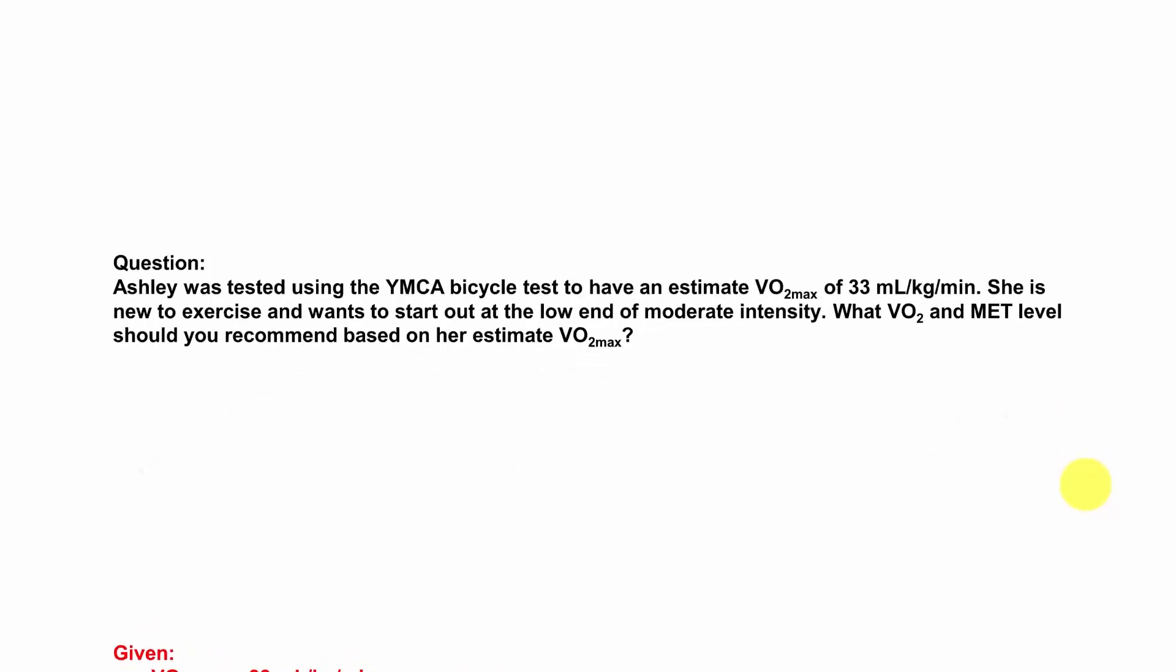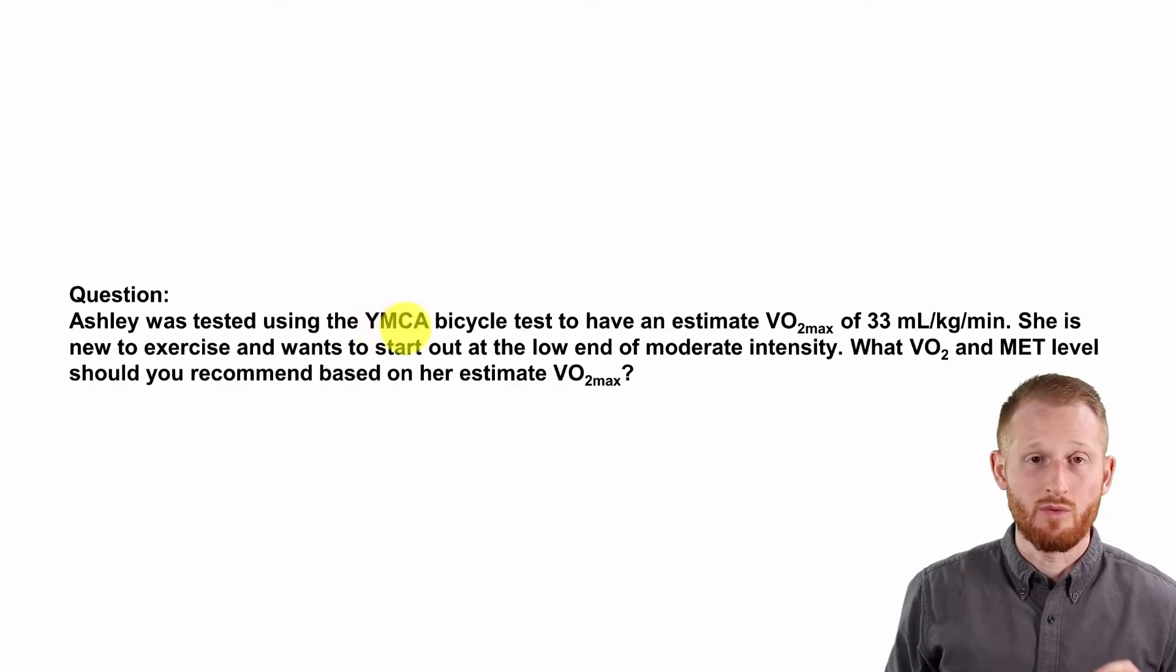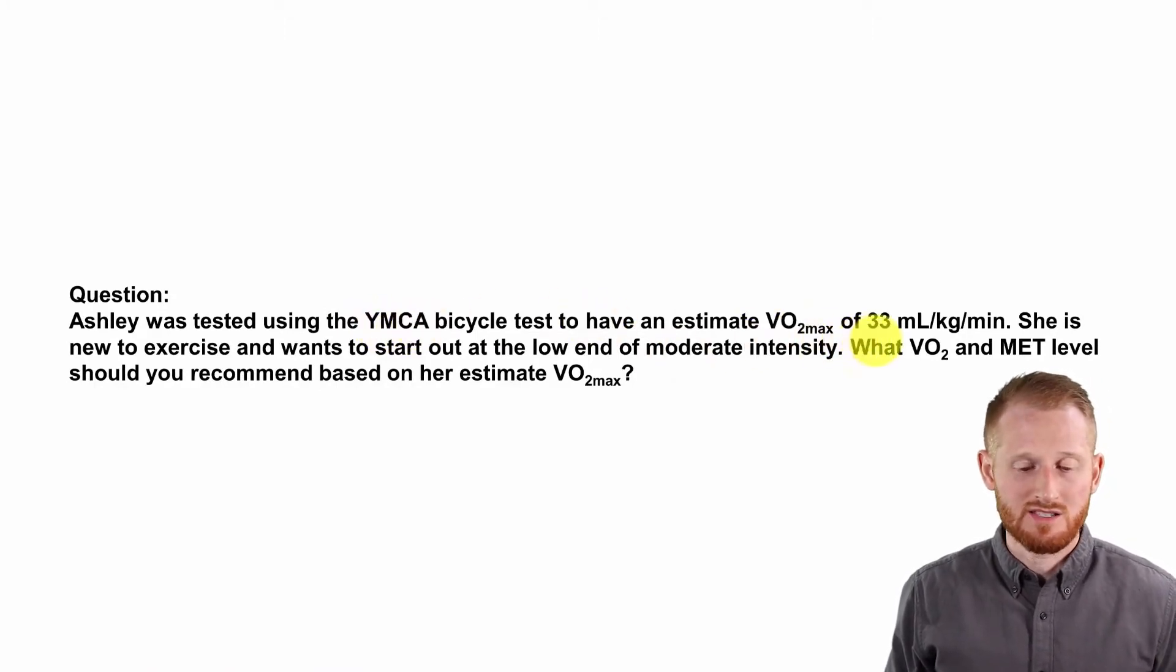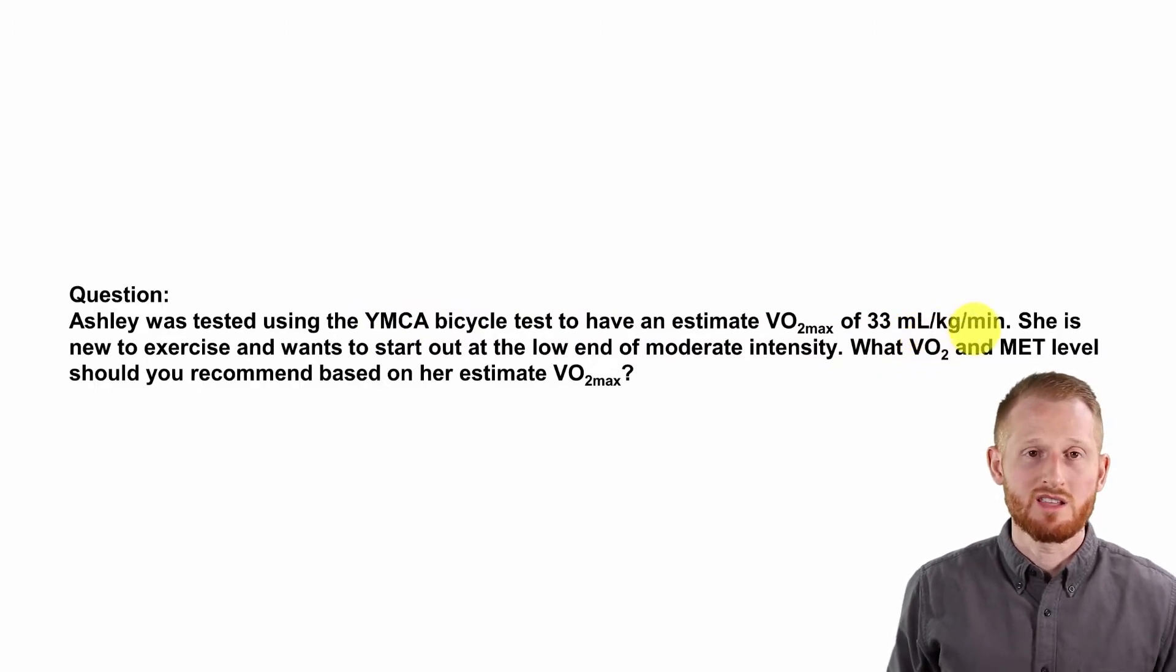Let's start with a question to help us frame what we're doing here. So we have Ashley who did a YMCA bicycle test that estimated VO2 max to be 33 mLs of oxygen per kilogram of body mass per minute.